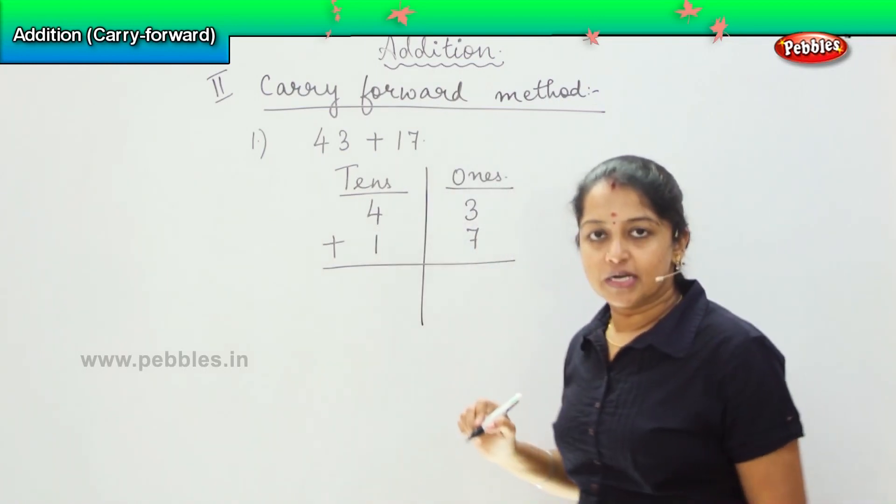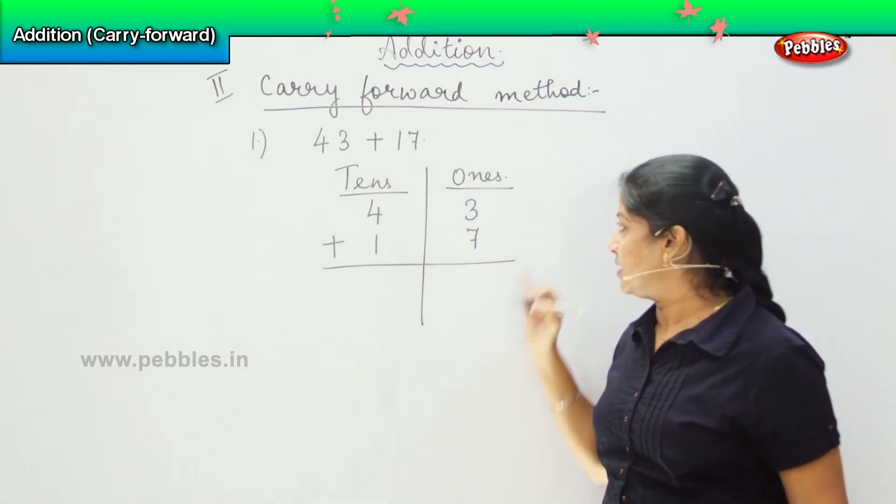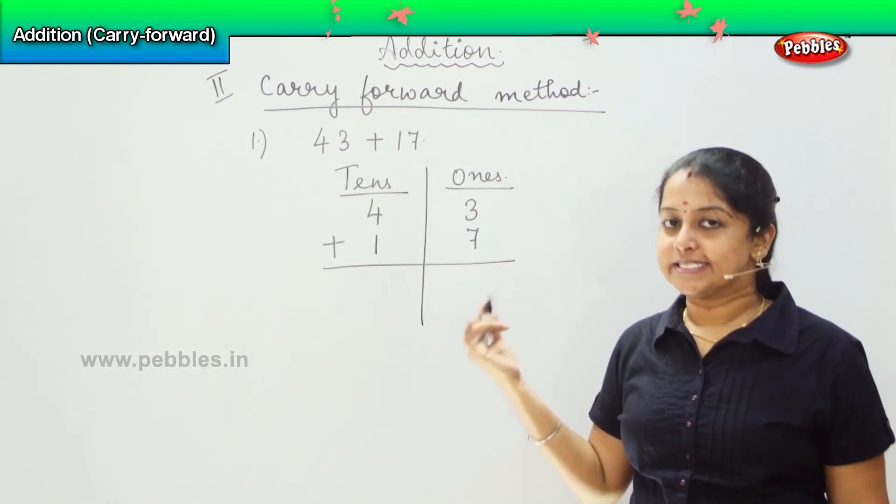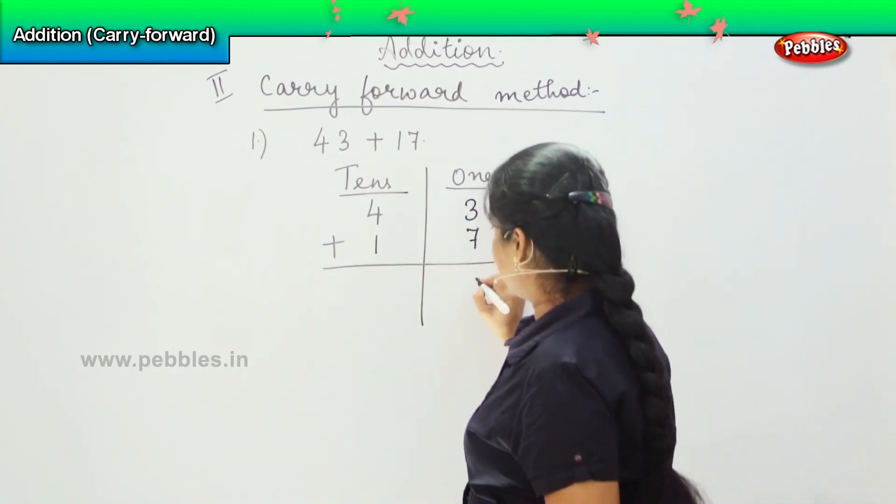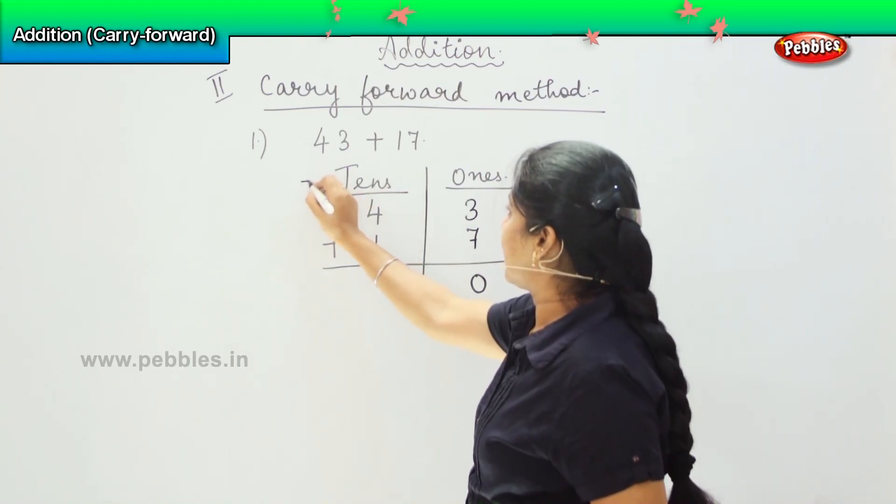So shall we start counting? Keeping 3 in the mind and 7 in the finger. So after 3 it's 4, 5, 6, 7, 8, 9 and 10. So 10 means my 0 is here and the 1 I am going to carry forward.